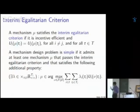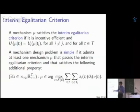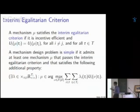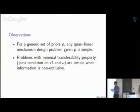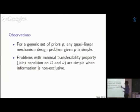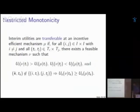I call a problem 'simple' if it admits at least one mechanism satisfying the interim egalitarian criterion and the technical condition. Not all problems are simple. There are conditions ensuring simplicity — for example, with more than three players, a generic condition on beliefs guarantees the problem is simple. Before showing the characterization, let me modify the monotonicity property.